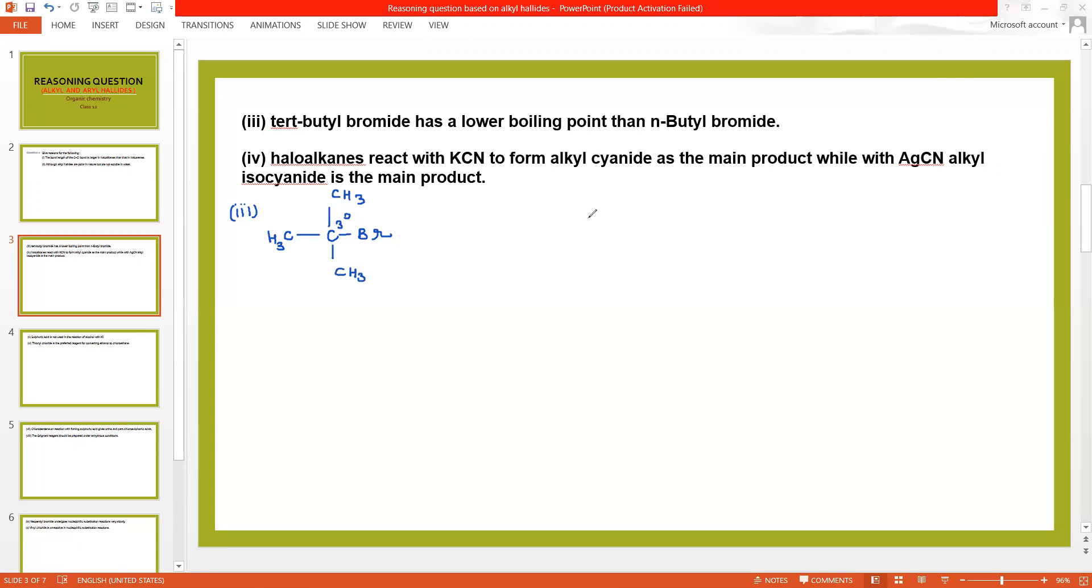While n-butyl bromide, the structure of n-butyl, n for normal, normal means long chain. All carbons form long chain along with one bromide group. Here you can see that the long chain in n-butyl bromide has larger surface area than that of tertiary butyl bromide.